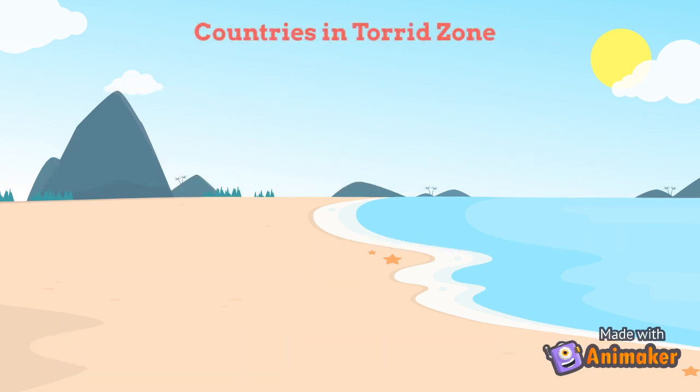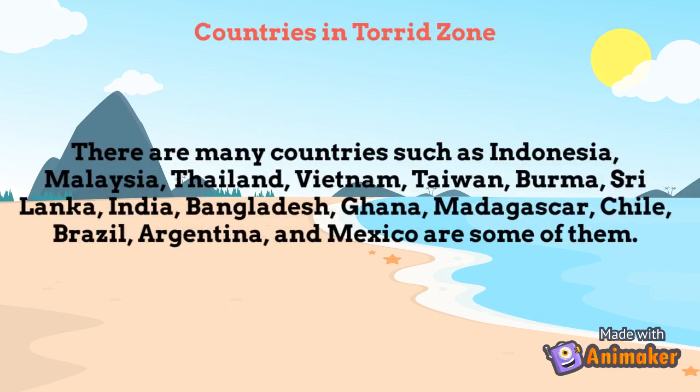Countries in the Torrid Zone: there are many countries such as Indonesia, Malaysia, Thailand, Vietnam, Taiwan, Burma, Sri Lanka, India, Bangladesh, Ghana, Madagascar, Chile, Brazil, Argentina, and Mexico, among some of them.